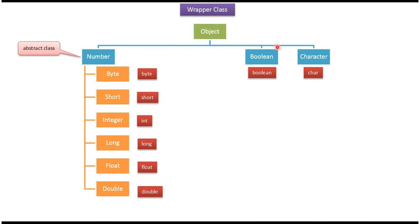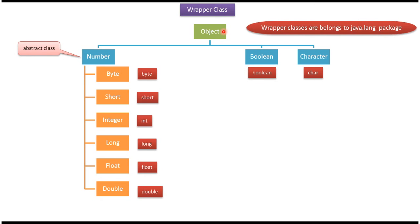Number, Boolean, and Character — these classes are subclasses of the Object class, and all these wrapper classes belong to the java.lang package.